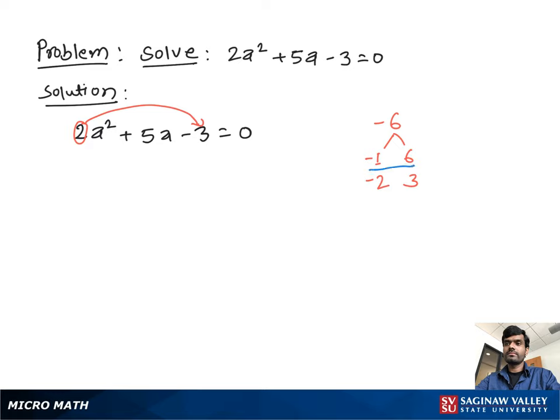Now we find a pair of numbers which when multiplied gives us negative 6 and on addition give us positive 5, and that number is negative 1 and 6.